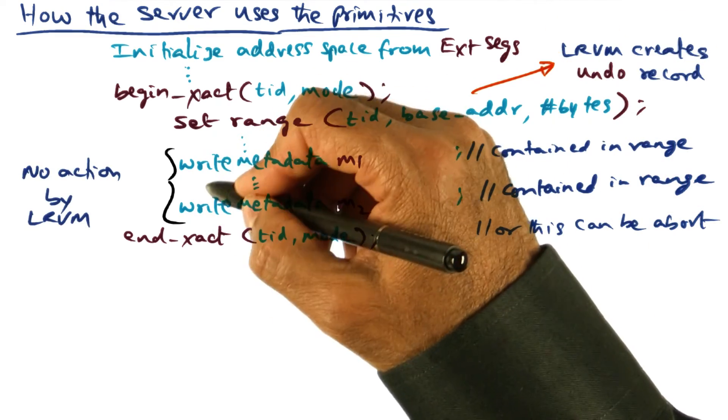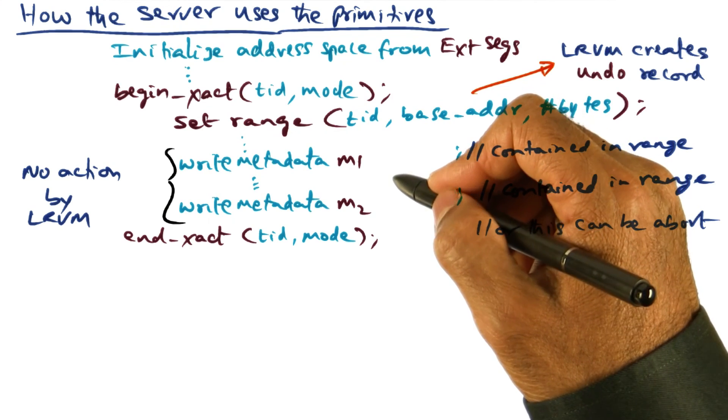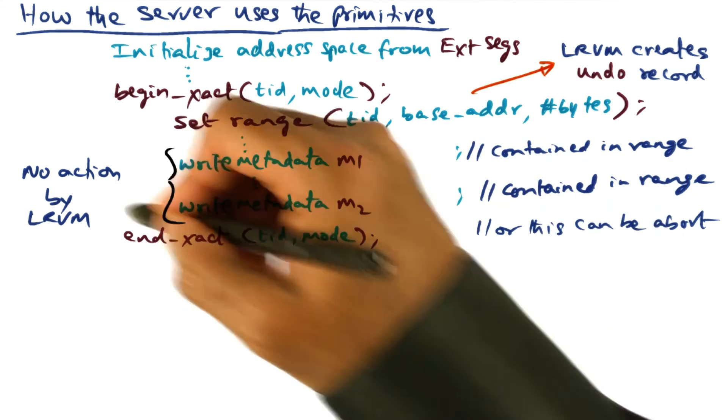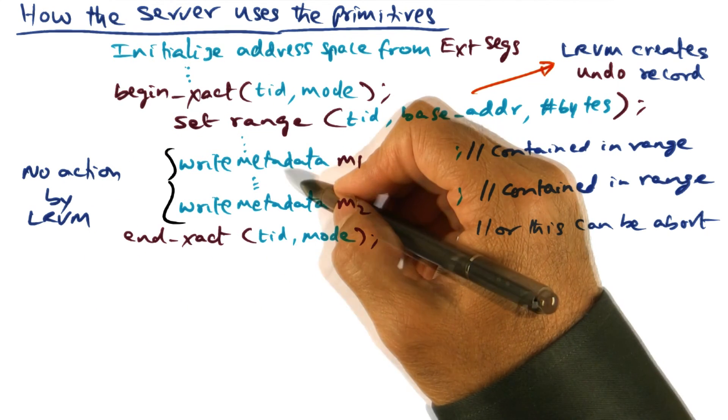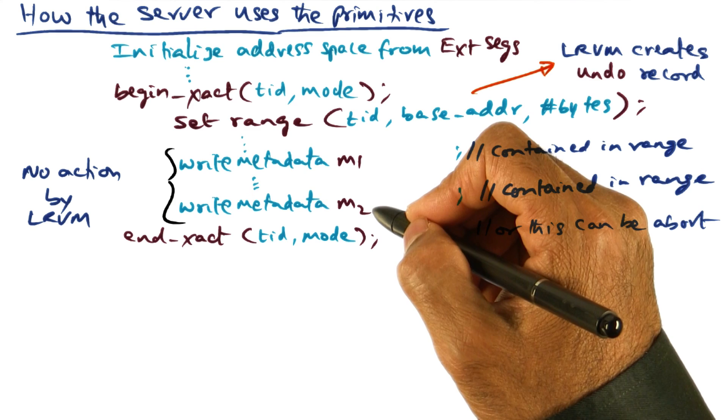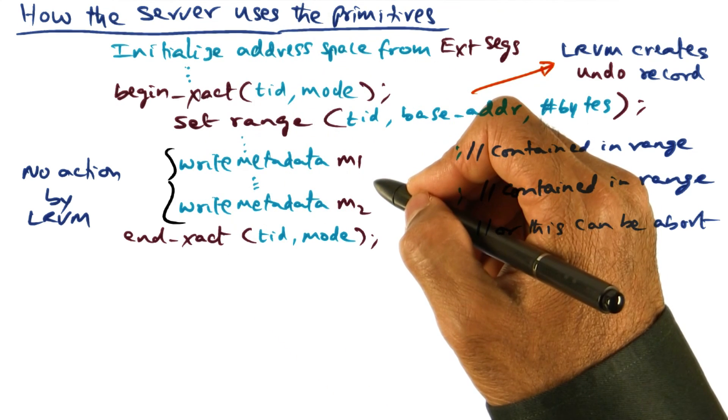So during the body of this critical section, when the application is modifying this in-memory version of persistent data structure, no action by LRVM. All these changes are happening directly to the virtual address space of that particular process, exactly where these in-memory copy of persistent data structures are living.